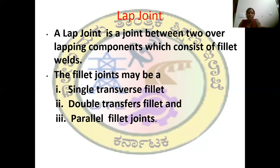In lap joints, it consists of three types of fillet welds. The first one is single transverse fillet. The second one is double transverse fillet. The third one is parallel fillet joints.